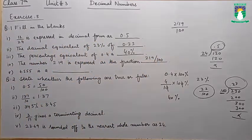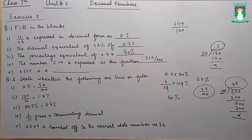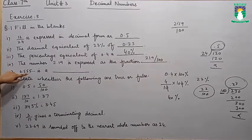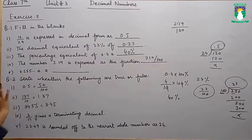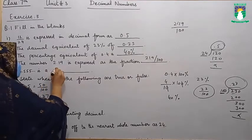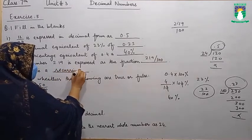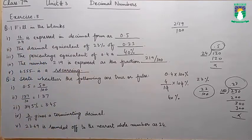Now students, here we have the 5th blank. 4.555... — what is 4.55? If you look at the decimal part, it has the digit 5, and that value repeats again and again: 5, then 5, then 5. It means that in the decimal number system, the number repeats. So what do we call it? Recurring. It is called a recurring decimal fraction.